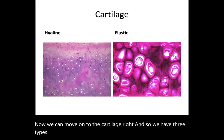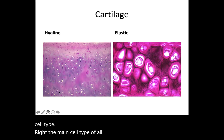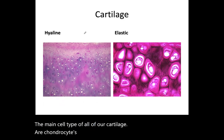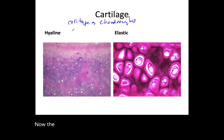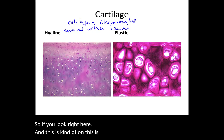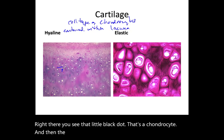Moving on to cartilage — we have three types. All three are going to have the same identical main cell type: chondrocytes. The chondrocytes are contained within a structure called a lacuna. Looking at this hyaline cartilage on scanning power — that little black dot you see is a chondrocyte, and the white area surrounding it is the lacuna.